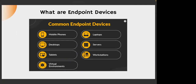What are some common endpoint devices we generally use? At a personal or organizational level, the most common endpoint devices include mobile phones, laptops, desktops, servers, tablets, workstations, and virtual environments like a virtual machine running Linux or any other operating system. We generally find these endpoint devices running at organizations as well as at an individual level.